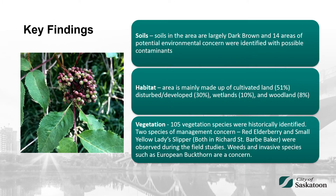Key findings included the identification of 14 areas of potential environmental concern with possible contaminants. Habitat across the study area was mainly made up of cultivated and disturbed or developed land with some wetlands and woodlands. Vegetation included over 100 different species, including two species of management concern: red elderberry and small yellow lady slipper. Weeds and invasive species such as European buckthorn were a concern in some areas.